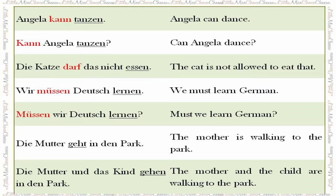'Die Mutter geht in den Park' — the mother is walking to the park. This is a basic German sentence with a subject, a verb, and then the object. 'Die Mutter und das Kind gehen in den Park' — the mother and the child are walking to the park. Here we have two subjects, 'die Mutter und das Kind', then a verb, and the object 'in den Park'.